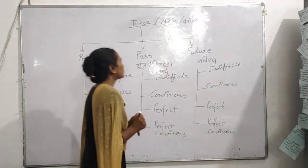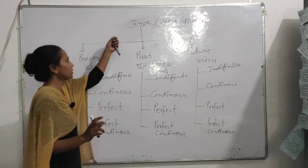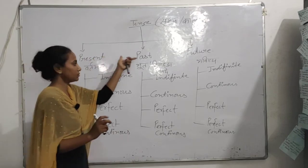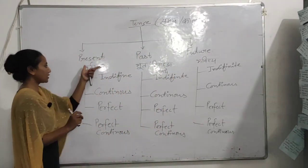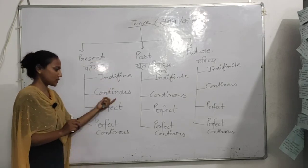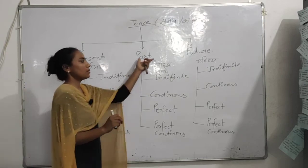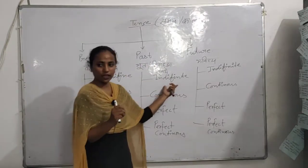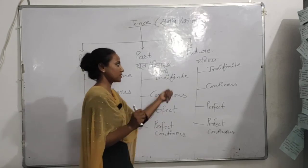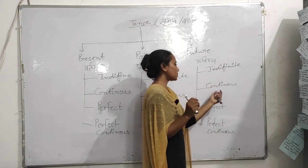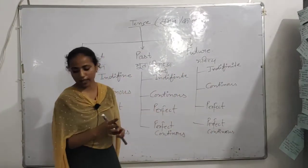इसी तरह हमारा Future में भी चलेगा। तो Tense के हमारे जो प्रकार थे वो सामने हैं आप सबके। Tense तीन प्रकार के — Present, Past, Future — और उनके भी चार-चार प्रकार हैं। Present के: Present Indefinite, Present Continuous, Present Perfect, Present Perfect Continuous। Past के: Past Indefinite, Past Continuous, Past Perfect, Past Perfect Continuous। Future के: Future Indefinite, Future Continuous, Future Perfect, Future Perfect Continuous।